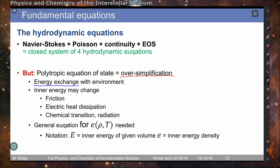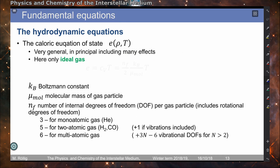So we have to replace our very simple equation of state with a more general equation of state that describes the internal energy of the volume element E as a function of density and temperature. Here, the non-capital E is the internal energy density — that is, the internal energy normalized to a given volume. The name for this equation is the caloric equation of state.